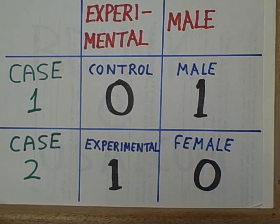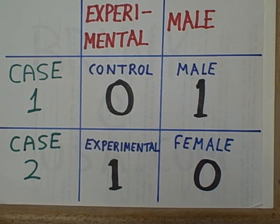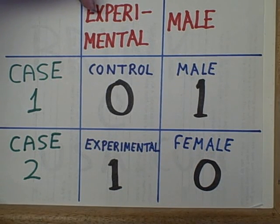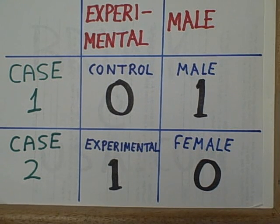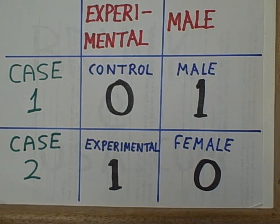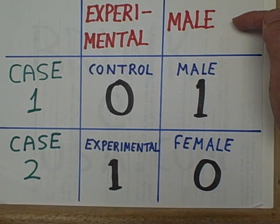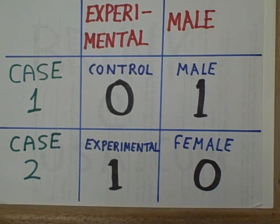So let's suppose that we are looking at a spreadsheet here and we can see the top two rows indicating our first case and our second case. We also see two columns, each column representing a different variable. The first column represents the variable: is the subject assigned to the experimental group or the control group? Assignment to the experimental group will be 1 and assignment to the control group will be 0. Then we have the subject's gender, and we've decided to call male 1 and female 0.